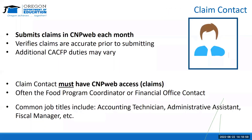Finally, we have the claim contact. This person submits claims in CNP Web each month. They may have additional CACFP duties, but that will vary by organization structure. In many organizations, the claim contact is often either the food program coordinator or the financial office contact. It is okay to have one staff member take on multiple duties; however, you want to make sure there is segregation of duties and cross-training among staff to ensure adequate administrative oversight.